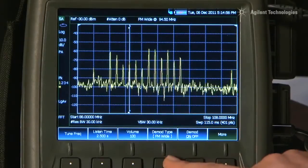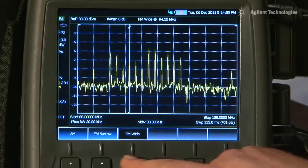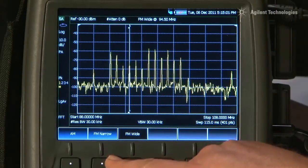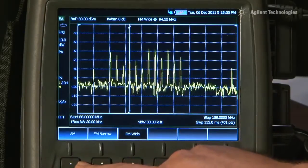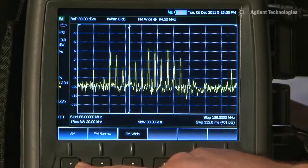The demod types available include FM wide, FM narrow for land mobile radio, and AM for broadcast AM and the air band.